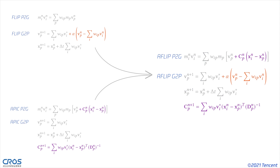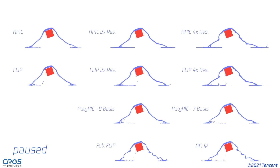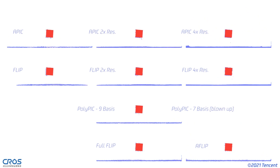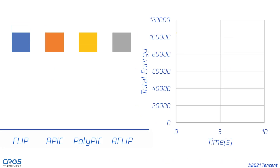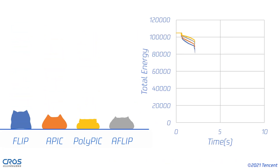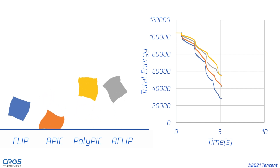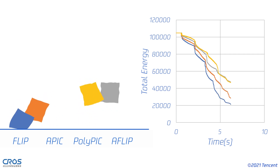We also extend the FLIP scheme by combining it with APIC, naming it AFLIP. In this example, AFLIP reproduces the complex structure, which only exists when using FLIP or APIC with much higher resolution. We also compare with POLYPIC, which fails to produce the structure. AFLIP also preserves more energy than FLIP and APIC, and its energy preservation capability is comparable with POLYPIC.